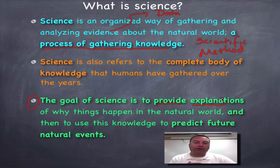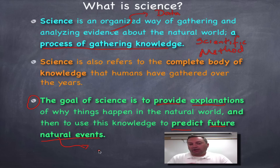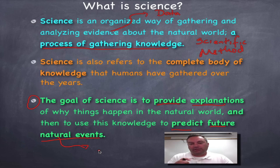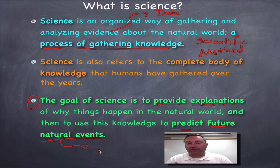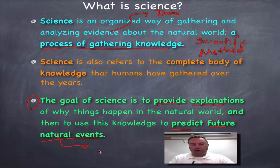We want to use our knowledge from science to be able to predict future natural events — and by natural we mean things that happen out in the environment. What causes a phenomenon to happen in the world? Science's goal is to find explanations for that, and those explanations have to be based on the evidence gathered during the scientific method, which will be the focus of the next episode. Until then, we'll catch you on the flip side.